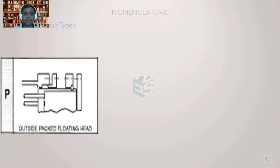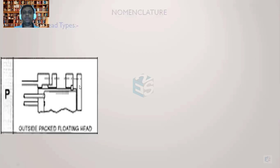A flange is welded to the main shell, and it has a pocket or groove where packing is placed. The packing touches the tube sheet and the channel shell from outside, resting inside the groove. The other flange has a male recess. When the stud and nut assembly is tightened, the two flanges come closer and the packing gets compressed on all sides — against the faces of the flanges, the tube sheet, and the groove — preventing leakage from any direction.